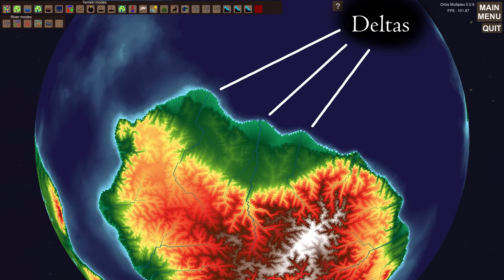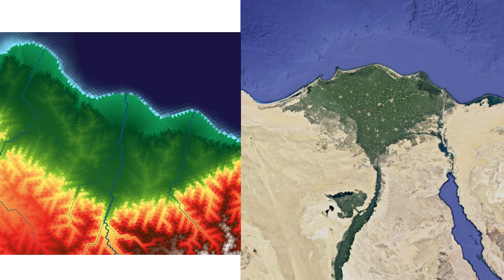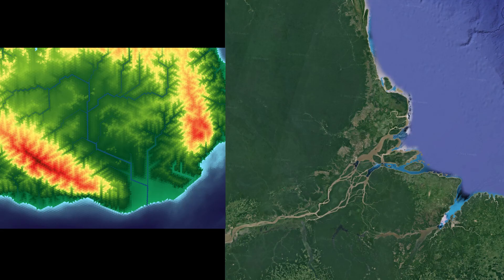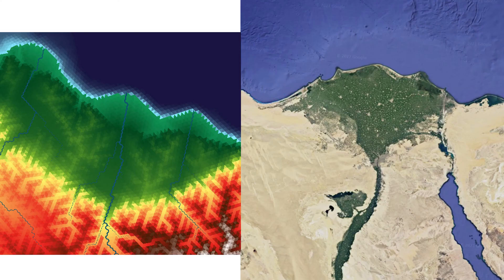It can also be seen that deltas are formed where some rivers enter the oceans. Due to the low resolution, the deltas don't look that impressive, but the overall shape is there. We can compare some real world deltas on the right and some deltas from my program on the left — such as the Nile draining into the Mediterranean Sea, the Mississippi draining into the Mexican Gulf, and the Amazon draining into the Atlantic. From a gameplay perspective, these would be highly fertile lands where early civilizations would likely form settlements.